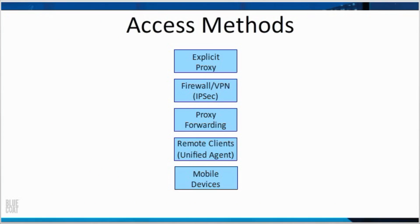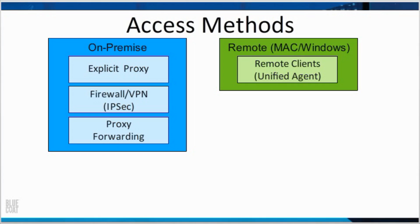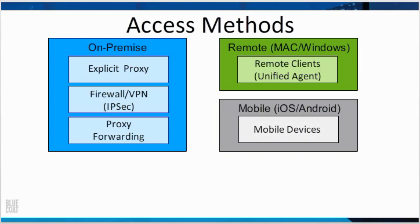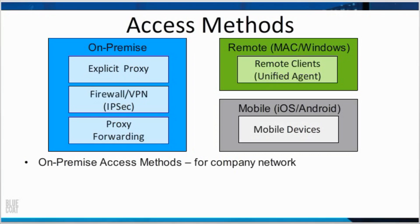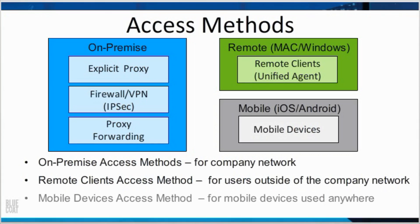Access methods are ways to pass traffic to the Bluecoat Cloud Web Security Service. There are five access methods with multiple configuration variations for most of them. Three access methods are used on-premise: explicit proxy, firewall VPN, and proxy forwarding. There is an access method for remote users called remote clients, which uses the Bluecoat software product Unified Agent for Mac and Windows computers. There is also an access method for mobile devices, used for Apple iOS and Android devices. Typically, a single on-premise access method is chosen for users on the company network, while remote clients provides protection outside the network, and mobile devices provides protection for mobile devices used anywhere.